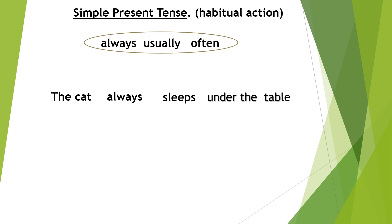This sentence cannot be written in the Chinese word order — you can't put the verb at the end. It must be: subject, then verb. And because of the words always, usually, and often, you put those in between the subject and the verb.